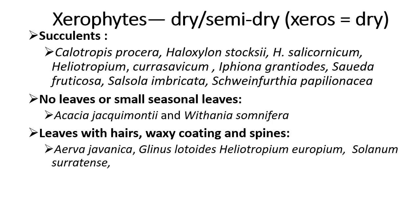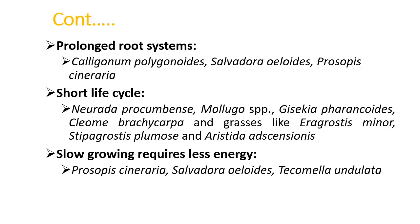These species may have no leaves, or have seasonal small leaves, and leaves with hairs, waxy coating, and spines. They have a prolonged root system in search of water from various soil profiles. They have a short life cycle — most of these species are those which are unable to survive in harsh climatic conditions, so they are also known as drought skippers, completing their life cycle in just three to four weeks.